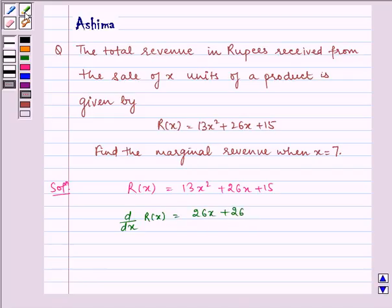And we have to find the marginal revenue when x = 7. So therefore, d/dx of R(x) at x = 7 is equal to 26 multiplied by 7 plus 26,